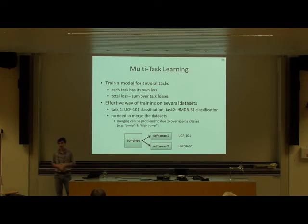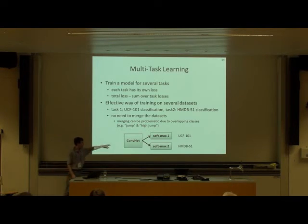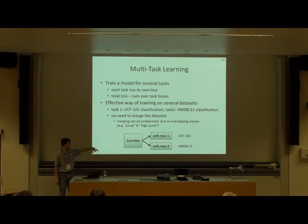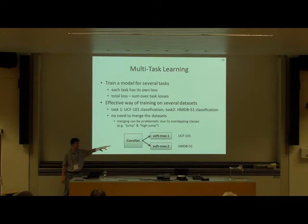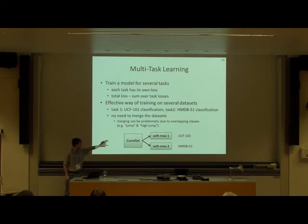So this is how the multitask setup looks: we have our shared network, and at the top we have two separate final classification layers, where one layer performs UCF classification and another performs HMDB classification. Each of these classifiers is equipped with its own loss function. We can do backpropagation with both of these loss functions, and the final loss is the sum of these two losses.